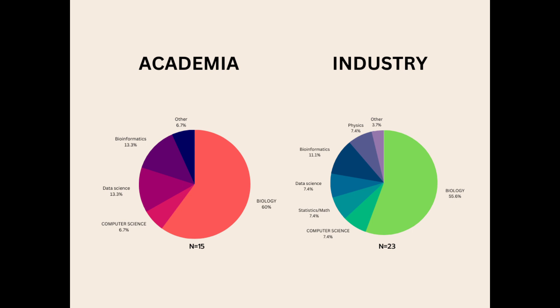The takeaway from this is that whether you want to go down the academia route or into industry, it doesn't really matter what you study. Just because the majority of people come from a biology bachelor's degree doesn't necessarily mean that's the best choice — it could simply mean more people from biology are choosing to switch into bioinformatics. It's also worth noting that it benefits a team to have people with multiple different backgrounds, allowing a whole array of skills and specializations, which often results in higher productivity and more capability for the group.